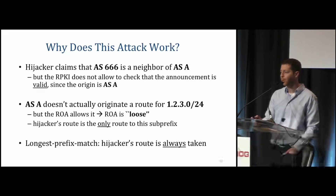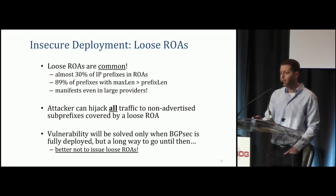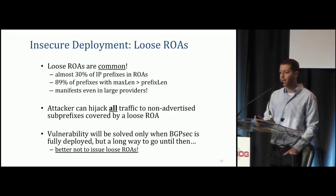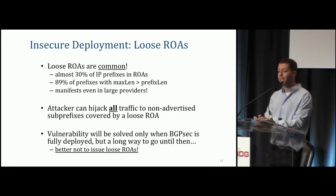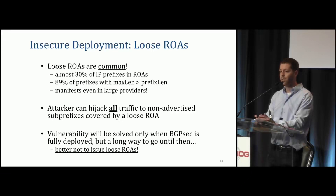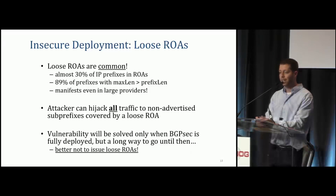Why does this attack work? The attacker at AS666 claims to be a neighbor of ASA, but RPKI provides no mechanism to verify that. ASA does not actually originate the slash 24 prefix the attacker targets, so the ROA is loose and allows it. The longest prefix match rule ensures that for most ASes, the hijacker gets the traffic regardless of its location. About 30% of RPKI-covered prefixes are unprotected because of this, and about 89% of prefixes using the max-length property are actually vulnerable. These vulnerabilities should be solved when BGPsec is deployed, but until then we should not issue loose ROAs.